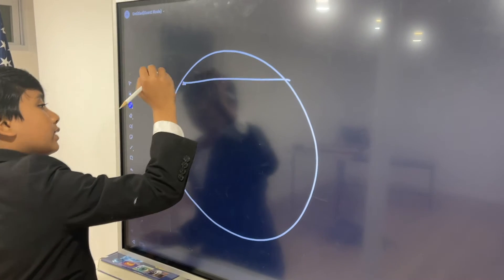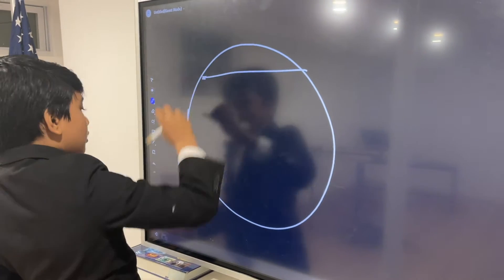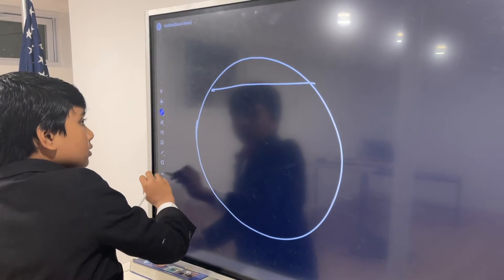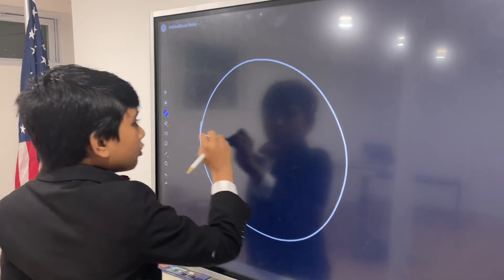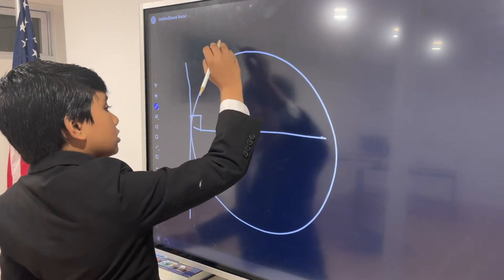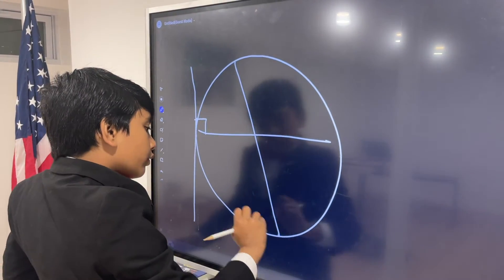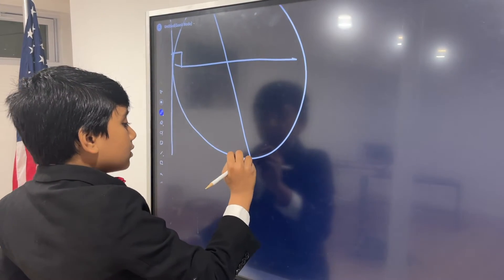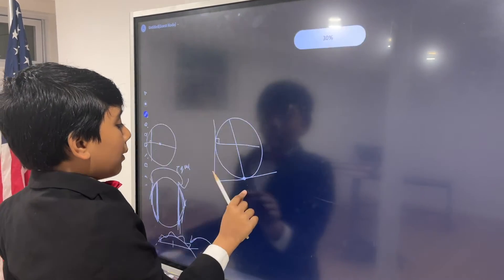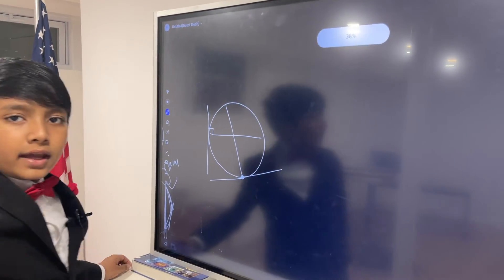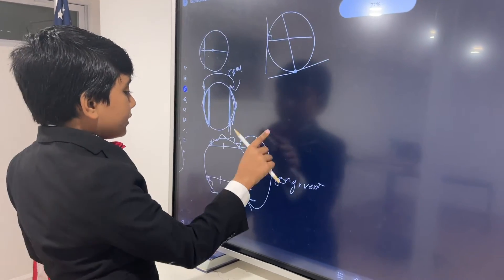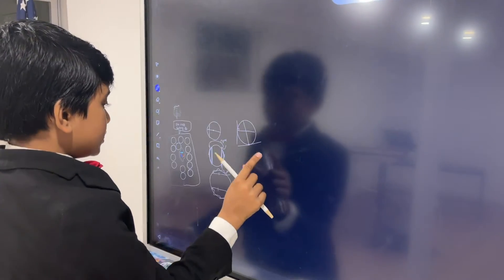This one states that if we have a chord, or a diameter, rather, that diameter is always going to be perpendicular to a line of tangency. So, if we have the diameter over here, then we can make a perpendicular line of tangency. If you remember from our circle review, a line of tangency is a line that intersects a circle at one point.